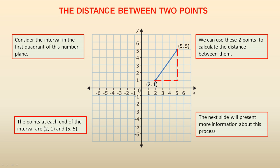The distance between two points. Consider the interval in the first quadrant of this number plane. This interval here, represented by the blue line. The points at each end of the interval are (2,1) and (5,5).